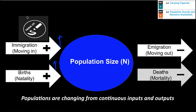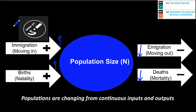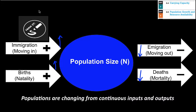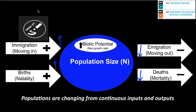Then we have our decreasing factors, which are emigration and mortality. These are going to decrease the population and force it to change negatively — emigration is moving out, and deaths, also referred to as mortality. The interplay between the increase factors and decrease factors is going to change population overall in terms of its population size.